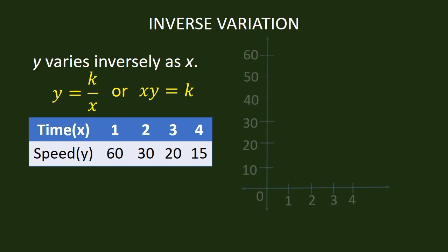We can also show inverse variation through graphs. We plot the points from the table in the Cartesian plane. The graph expresses inverse variation because when the values of X increase, the values of Y decrease.